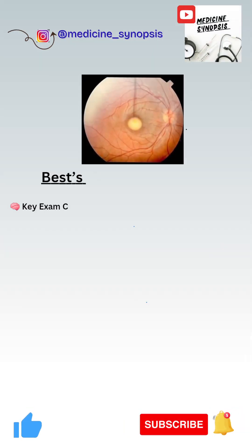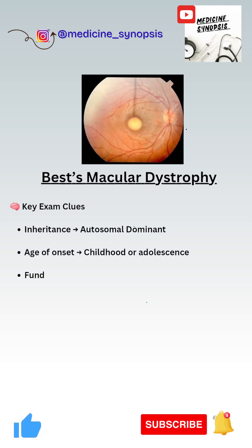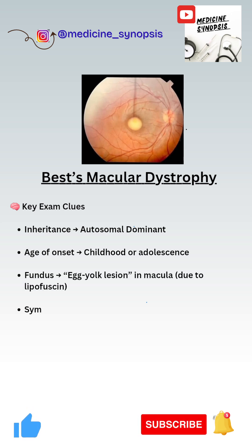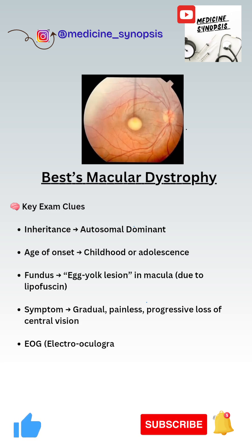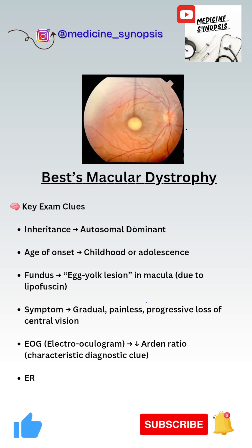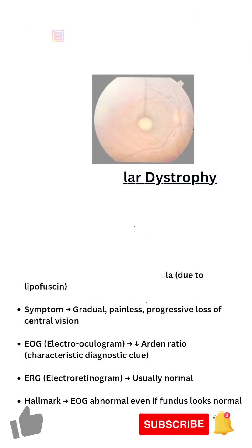Key exam findings in Best's macular dystrophy include autosomal dominant inheritance, usually presenting in childhood or adolescent age group, fundus examination showing an egg yolk lesion in the macula, and history of gradual painless progressive loss of central vision. The diagnostic and characteristic cue is EOG showing a low Arden ratio. ERG is usually normal, and the hallmark finding is an abnormal EOG with normal-looking fundus.